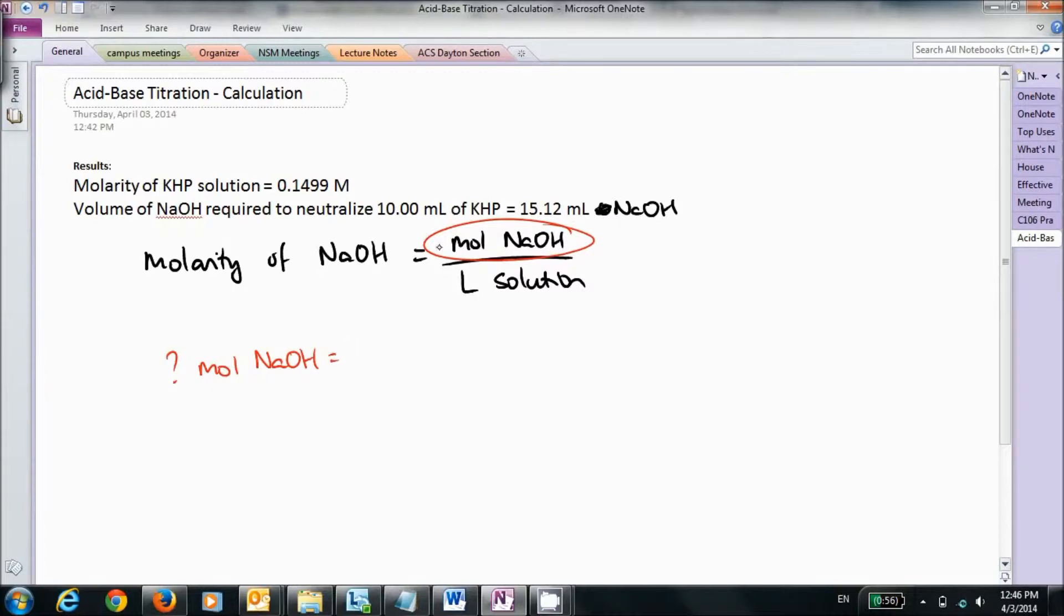And KHP is actually a monoprotic acid. So you have KHP plus NaOH reacting to form KP minus plus Na plus plus H2O. So it's a 1 to 1 ratio of KHP and NaOH.